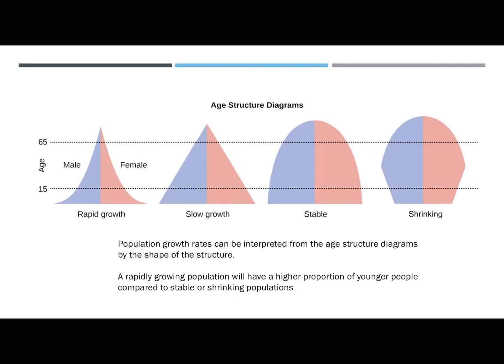Population growth rates can be interpreted from age structure diagrams based on the shape of the structure. A rapidly growing population will have a higher proportion of young people compared to stable or shrinking populations — it's a very steep triangular shape.